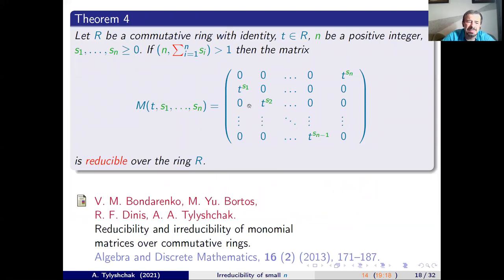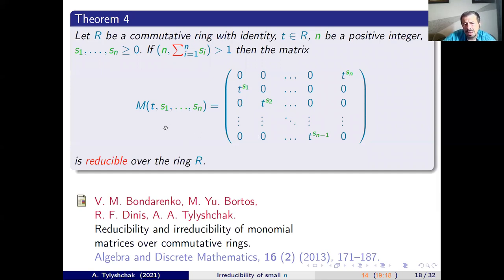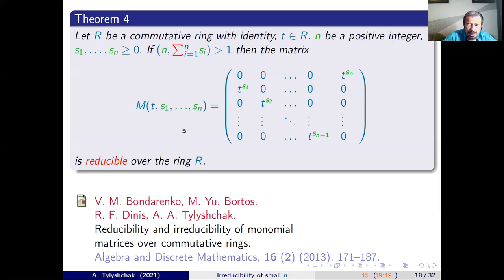First, we show that matrix M is reducible if the size of the matrix N and the sum of all exponents of the elements in non-zero positions of matrix M are not co-prime. Moreover, we can show that in the reducible form on the left, we obtain a matrix of similar form but of smaller size and with different exponents as parameters. This result is due to Bondarenko, Maria Bortos, Ruslana Denise, and myself.